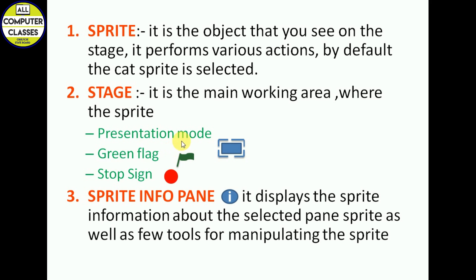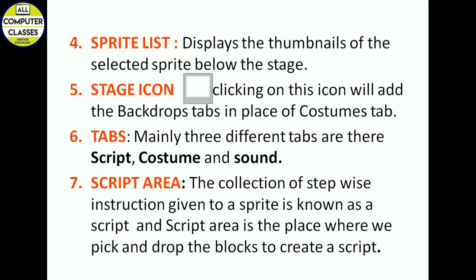The stage is the main working area. We have three modes available. To present our animation, we press the presentation button. To start the animation, we press the green flag. To stop it, we press the red button. Below the stage we have the sprite info pane, where the sprite is shown as a thumbnail, and at the top left corner there is a button that displays the sprite information.